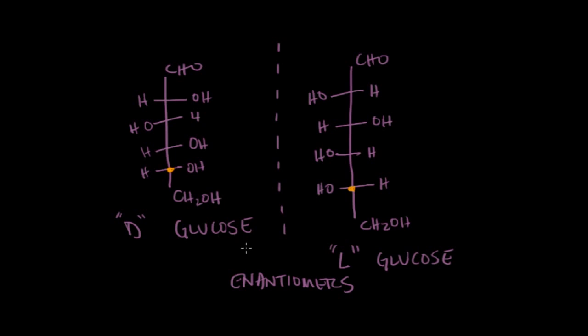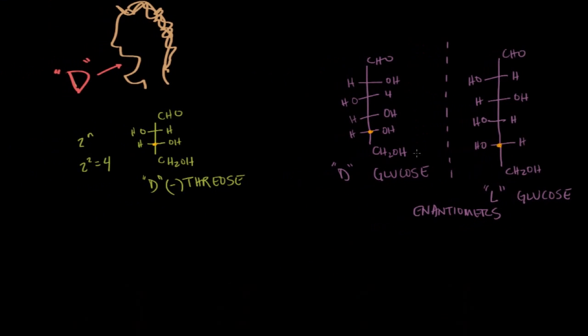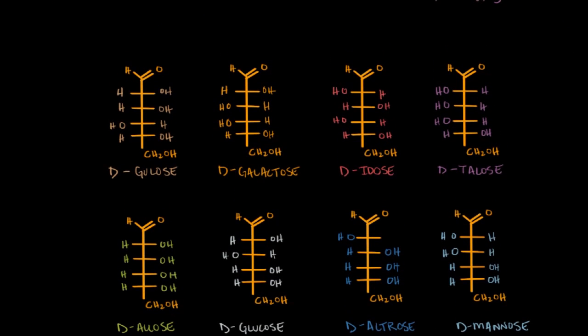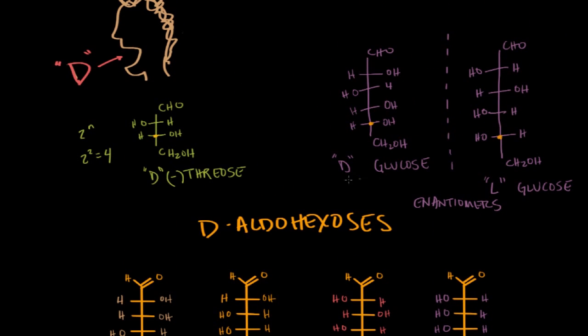Now that being said, if the D-aldohexoses, these glucoses, if the D and L-aldohexoses are enantiomers, that means that all of the D-aldohexoses have to be diastereomers of each other, because they're not superimposable, and they're not mirror images. And I know that's confusing, but I've drawn out here all of the D-aldohexoses, and we'll just take a look at what I'm talking about. So we have the D-aldohexoses here, and there's eight of them that I've drawn. So in the case of glucose up above, you see that D-glucose and L-glucose are enantiomers. They differ at every single carbon.